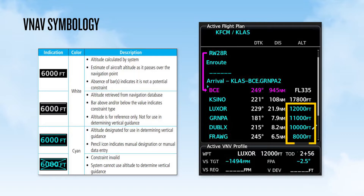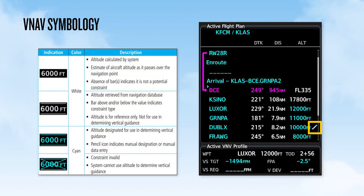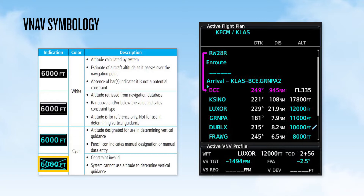An altitude displayed in cyan is an altitude used in determining vertical guidance. If a pencil appears next to the altitude, that indicates the altitude was manually entered. An invalid constraint, which cannot be used by the system, will appear with an X over the altitude.